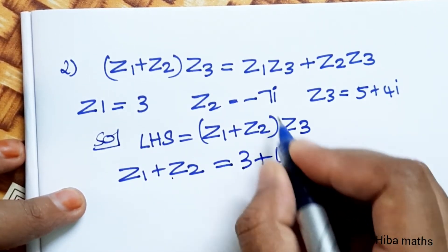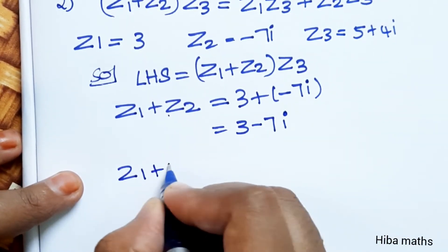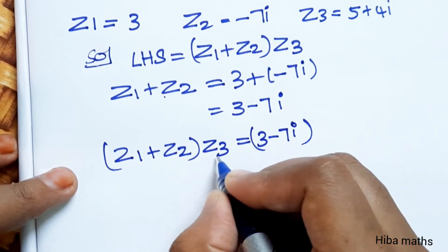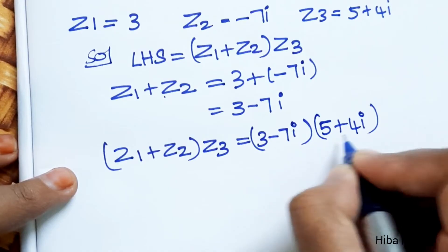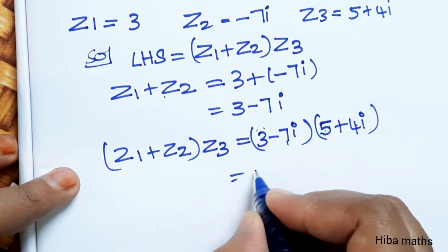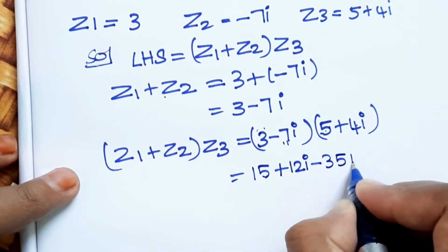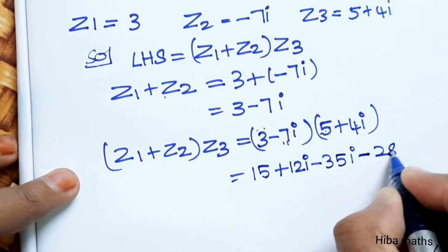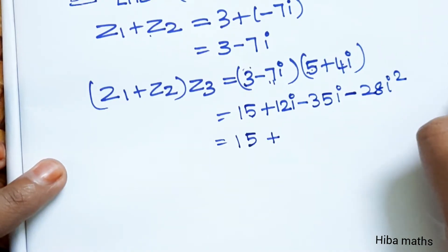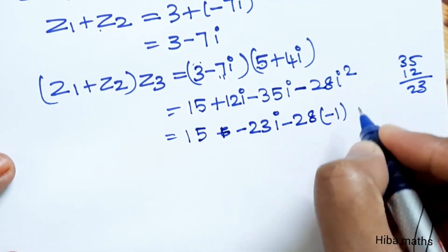z1 is equal to 3, z2 is equal to minus 7i. So z1 plus z2 gives 3 minus 7i. Multiplying by z3 which is 5 plus 4i: (3 minus 7i) into (5 plus 4i). Expanding: 3 times 5 is 15, plus 3 times 4i is 12i, minus 7i times 5 is minus 35i, minus 7i times 4i gives minus 28i squared. So: 15 plus 12i minus 35i minus 28i squared.